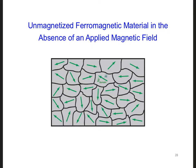In the absence of an applied magnetic field, all of these domains are randomly oriented, all these green magnetic domains here. And so if you were to add all these magnetic moments, all these green arrows together, they would all cancel out.